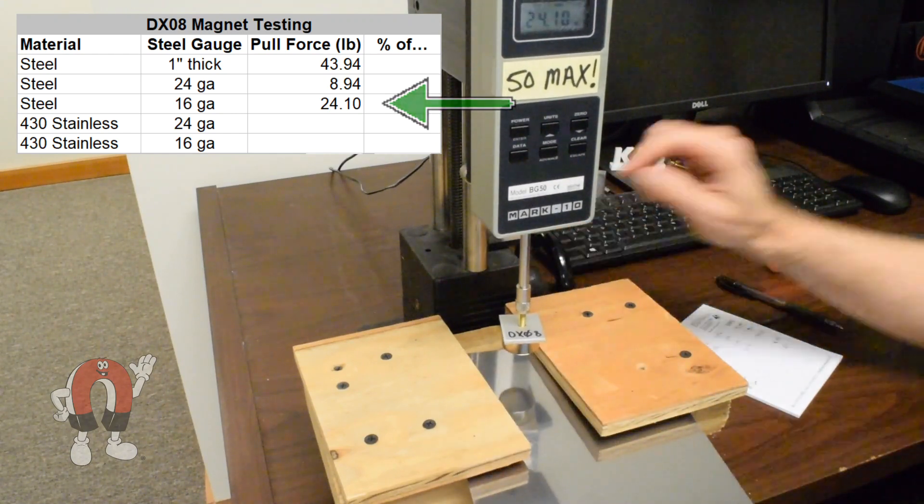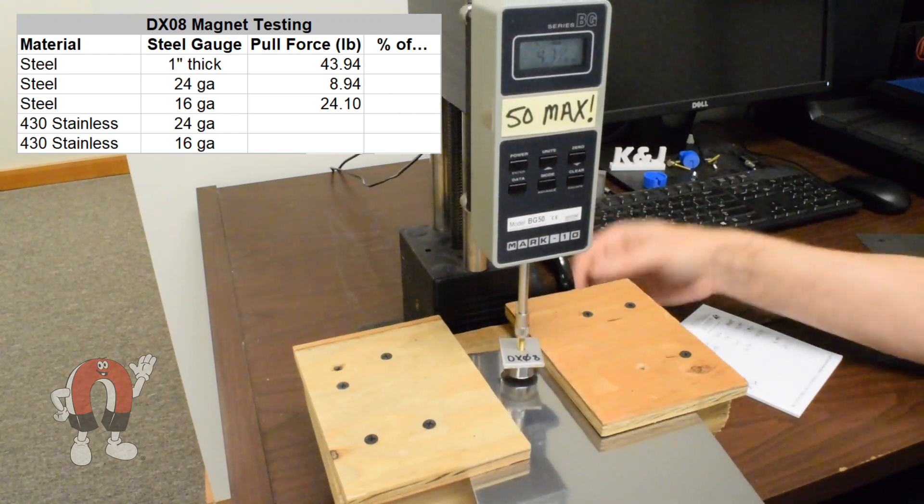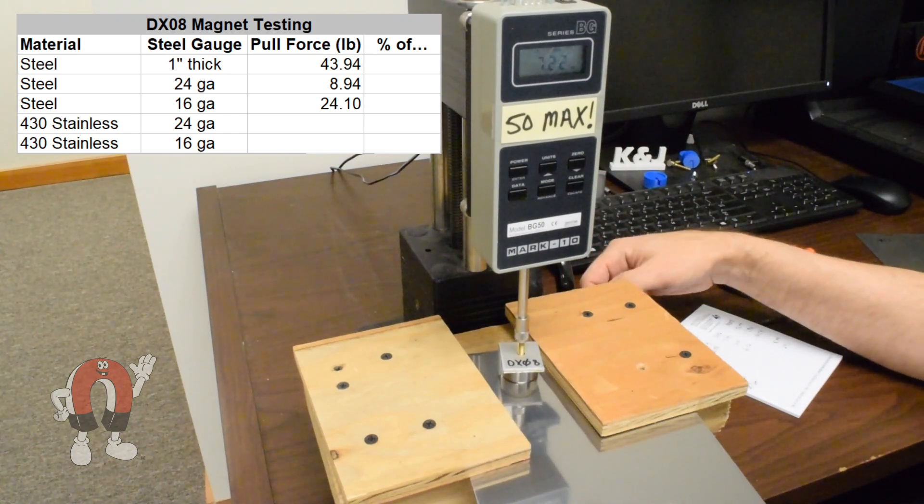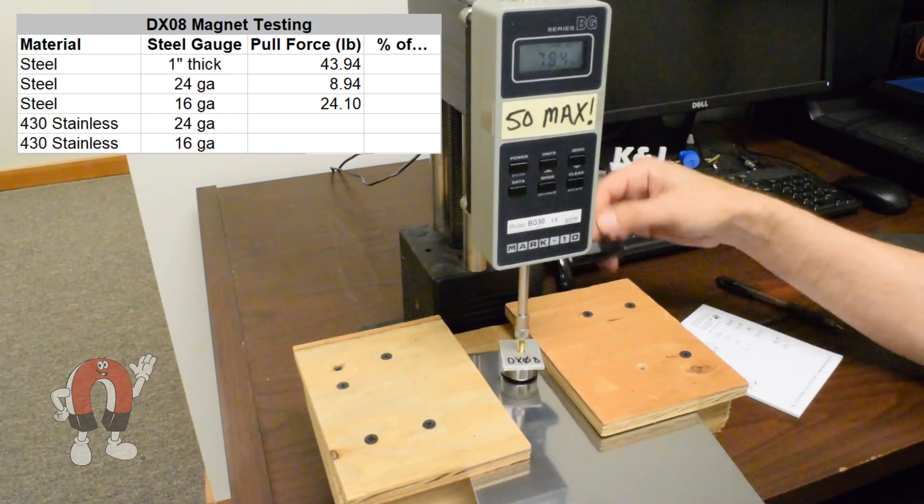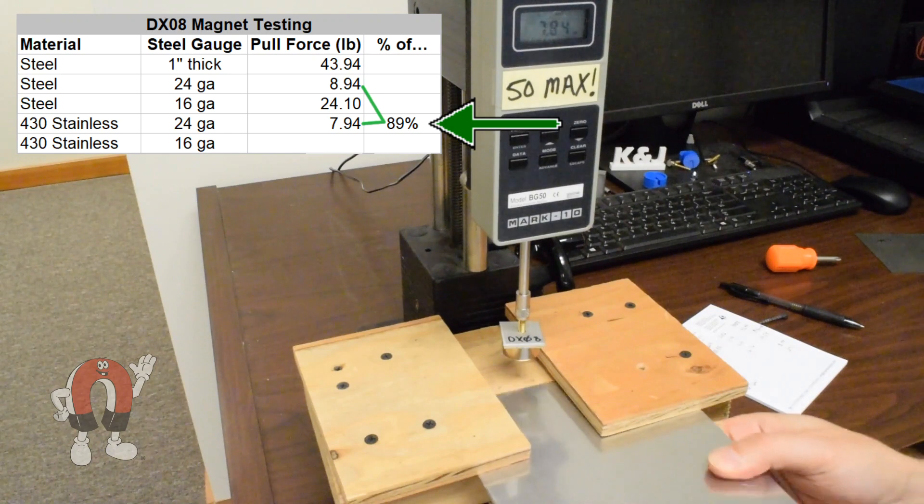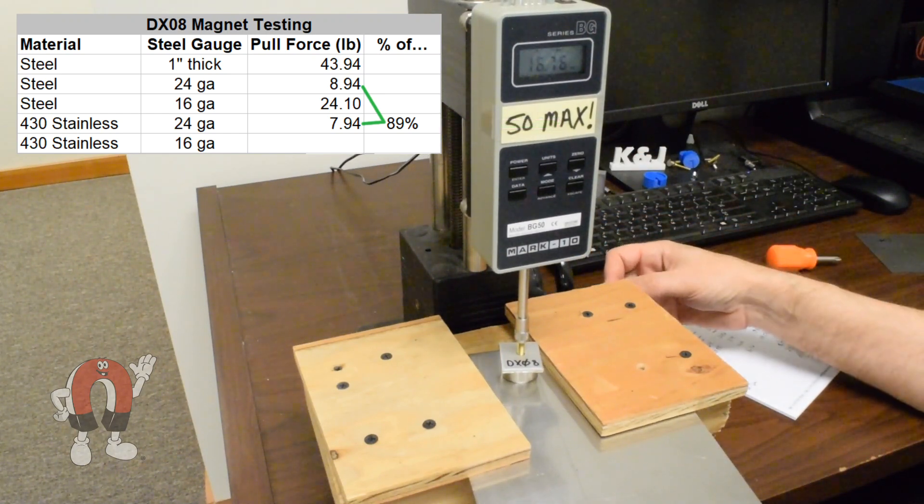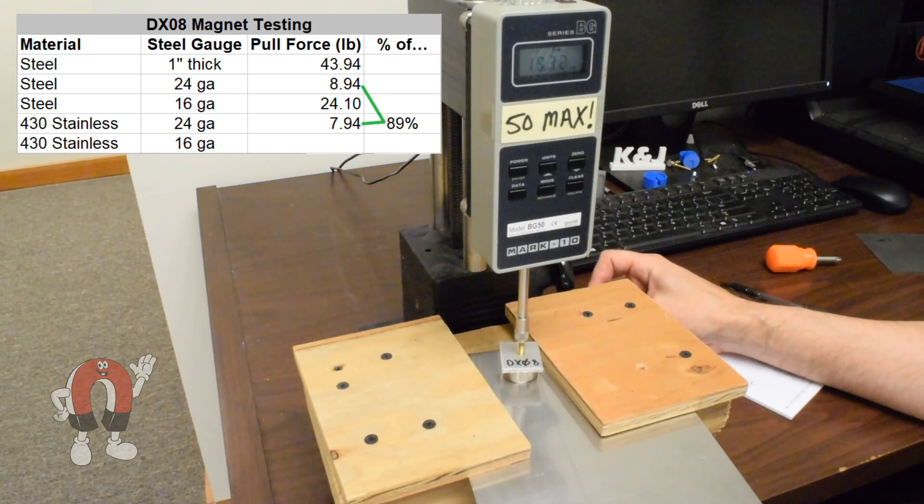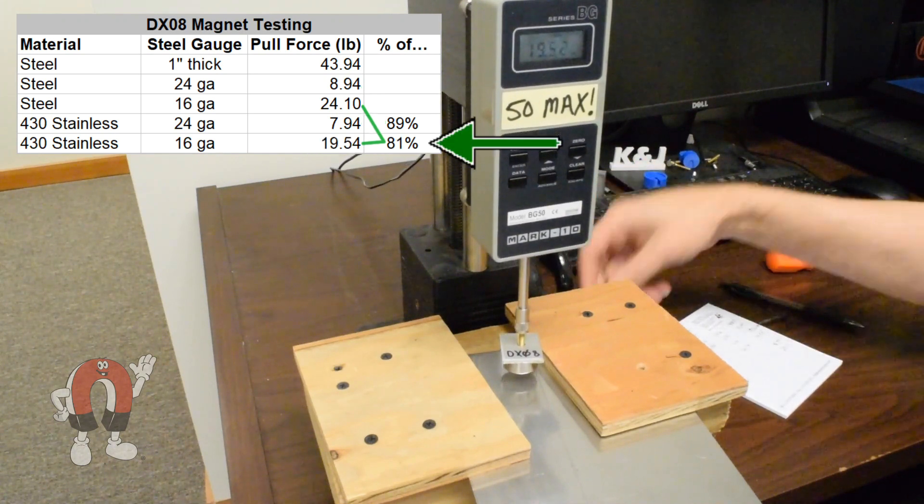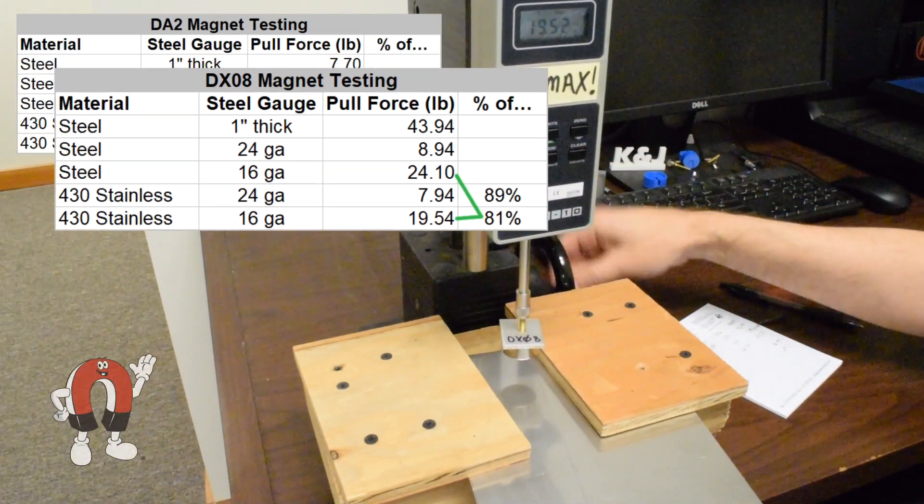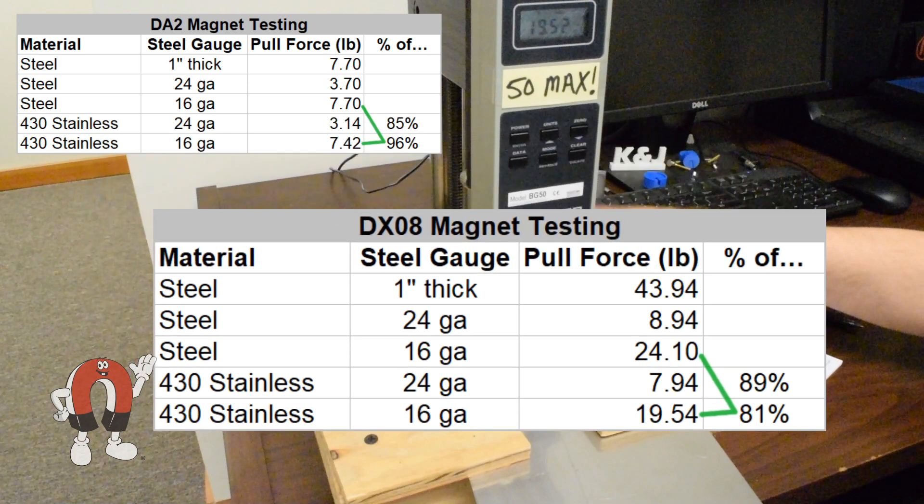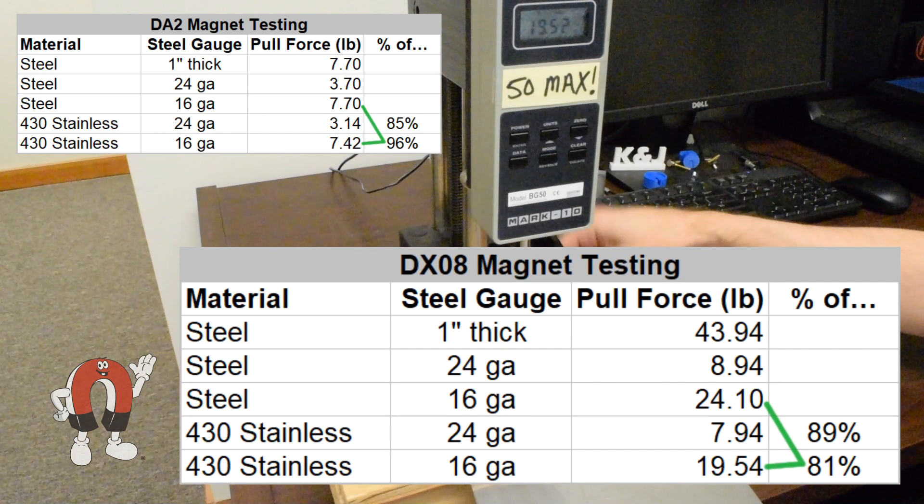To the thin stainless steel, 8 pounds, over 10% weaker than the regular steel. What's going on here? The stainless is always weaker, but how much weaker varies. There isn't an obvious rule of thumb from these measurements.